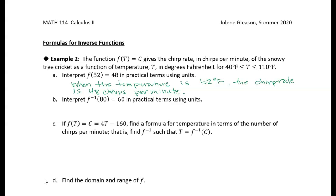Now this next question is asking: what does f inverse of 80 equals 60 mean in practical terms, using units? So the inverse swaps the input and the output. If our original function took temperature and gave us chirp rate, then the inverse is going to take chirp rate and give us temperature. So for an input of 80, now 80 is our chirp rate, because they're swapping the input and the output.